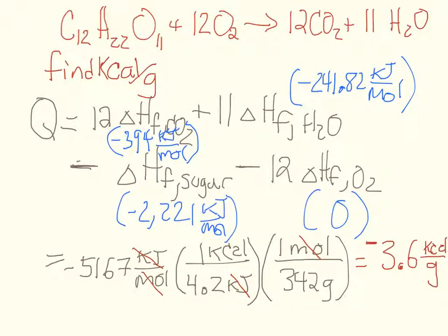Now some of the people in class had a slightly higher number than that, and I think that's because they used a different value for water. Remember I said this value here, the negative 241, is the value for making water vapor. It's actually a little bit higher, or larger negative number, for making liquid water. So you'll get a slightly different answer there. And also we may have different answers because we were carrying different numbers of significant figures based on which value we were calculating.